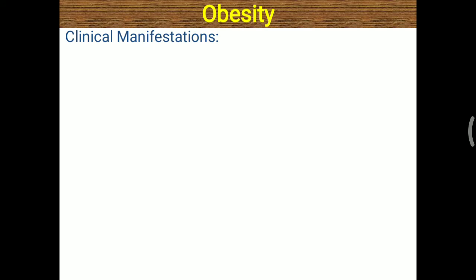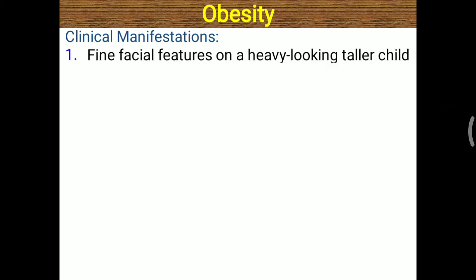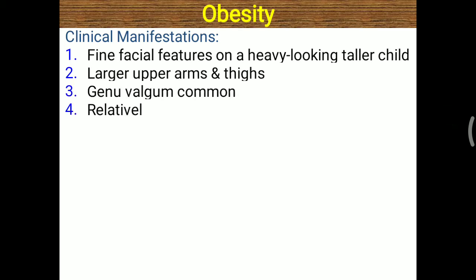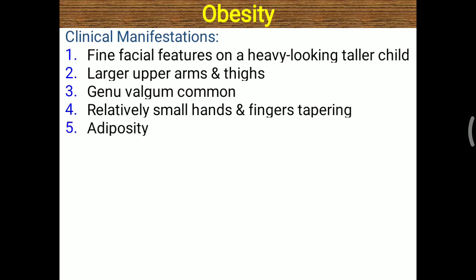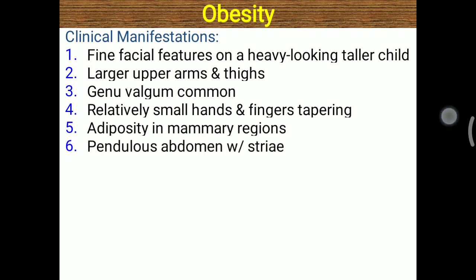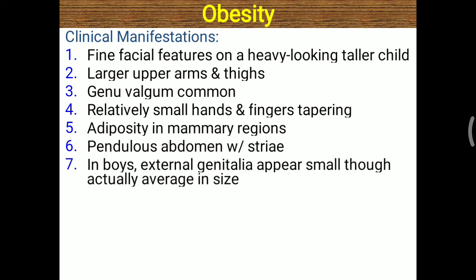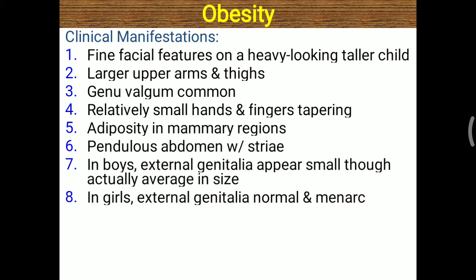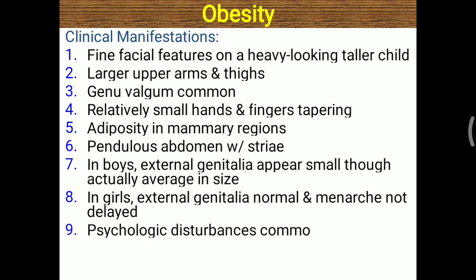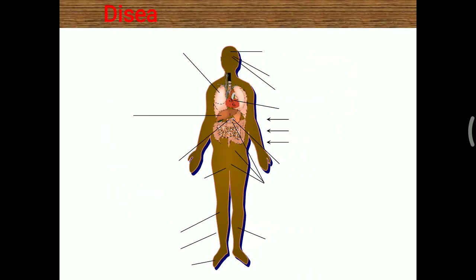Clinical manifestations of obesity include fine facial features on a heavy-looking child, larger upper arms and thighs, genu valgum, relatively small hands and finger tapering, adiposity in mammary regions, and pendulous abdomen. In boys, external genitalia appears small though actually average in size due to obesity. In girls, external genitalia is normal and menarche is not delayed. Psychological disturbance and advanced bone age are also commonly observed.